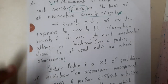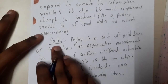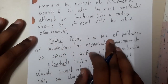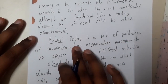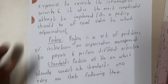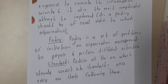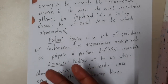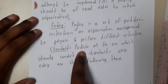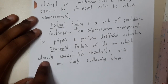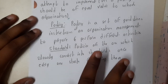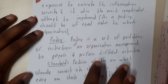Let us go through the definitions first. A policy is a set of guidelines or instructions that an organization manages to prepare and perform different activities — it is essentially a rule or regulation which you should follow. Policies are the ones which slowly convert into standards once everyone starts following them.